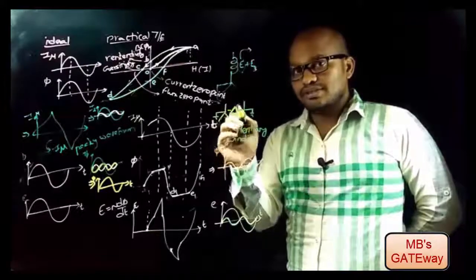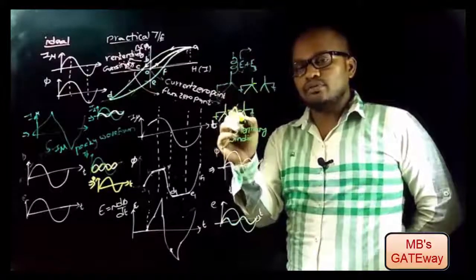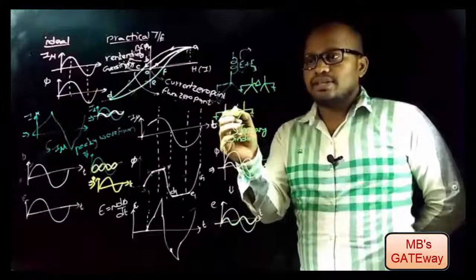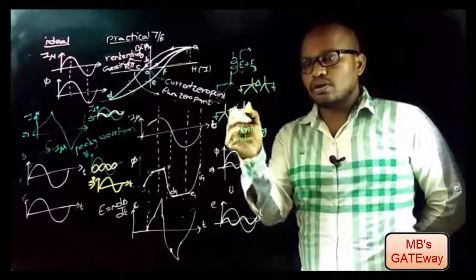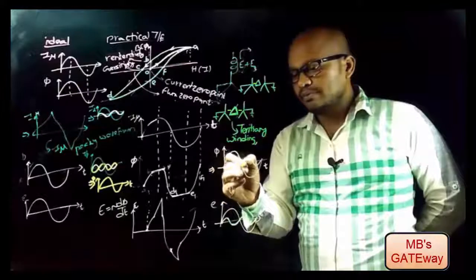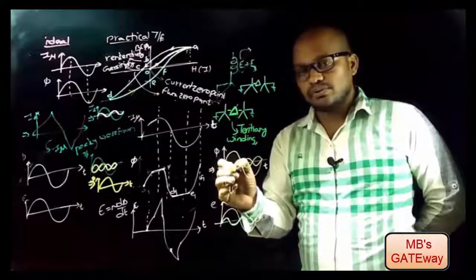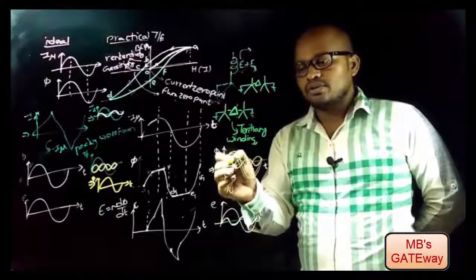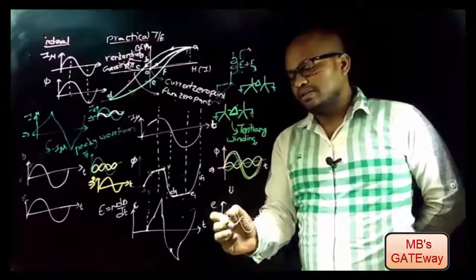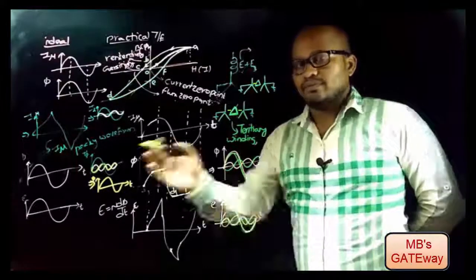Similarly, in three-phase transformers, third-order harmonics are reduced by using a tertiary winding connected in delta. When a path is provided to the third-order harmonic current, it flows and creates a flux φ in a direction opposite to the third-order harmonic flux. Because of this, the two fluxes get neutralized, and the only remaining flux is sinusoidal. Because of this sinusoidal flux, we get a sinusoidal output EMF.